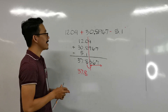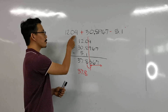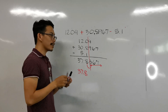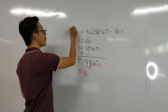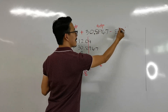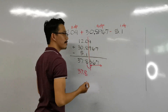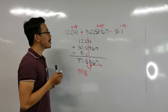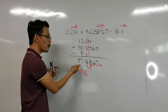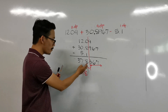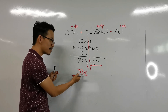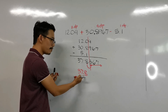Here is the trick: when identifying the least precise measurement, just take note of which number has the least number of decimal places. The first number has 2 decimal places, the second has 4 decimal places, and the third has 1 decimal place. The least number of decimal places is 1, so our answer must only have 1 decimal place. Therefore, our final answer is 37.8.